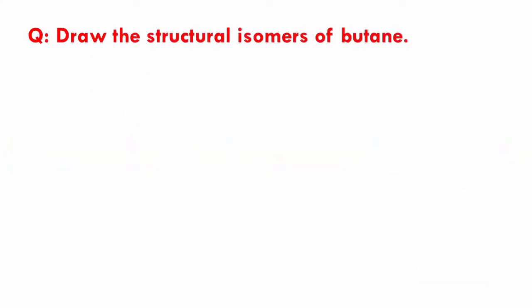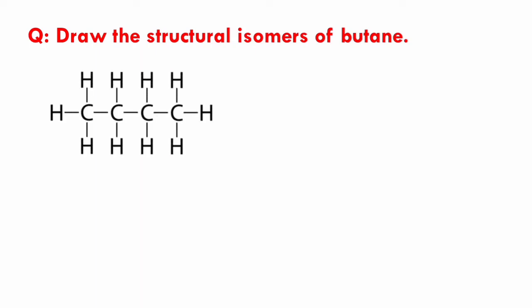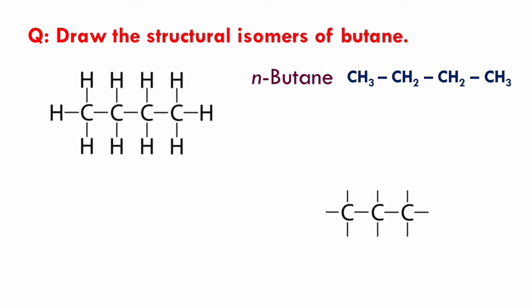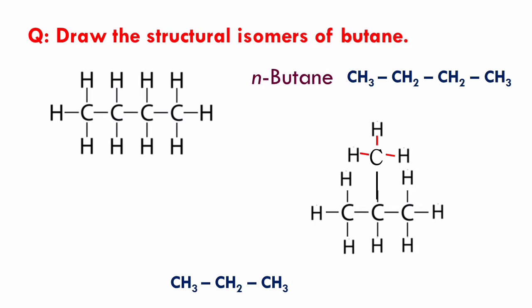Let's learn how to draw the structural isomers of butane. The first structure is normal butane, where all four carbon atoms are in a single chain with single bonds between each other. Its condensed formula is CH3CH2CH2CH3, known as n-butane. In the second structure, we take three carbon atoms in a single chain and the fourth carbon atom as a branch. When placing a carbon atom as a branch, remember the branch should not be on the first or last carbon atom. Completing hydrogen atoms gives CH3CH(CH3)CH3.